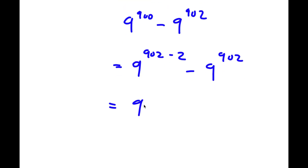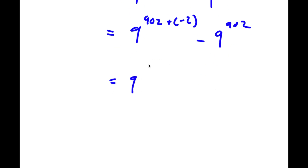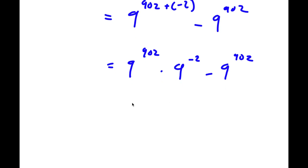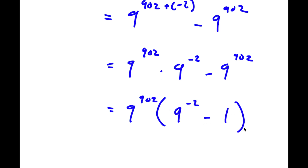I'm going to rewrite this as 9 to the power of 902 plus negative 2 minus 9 to the power of 902. So this is equal to 9 to the power of 902 times 9 to the power of negative 2 minus 9 to the power of 902. If I factor out 9 to the power of 902, I get 9 to the power of 902 times 9 to the power of negative 2 minus 1.